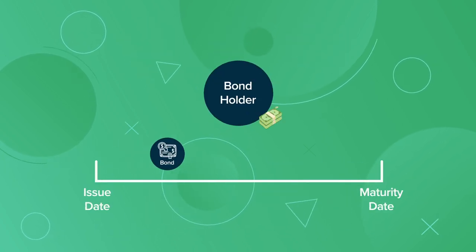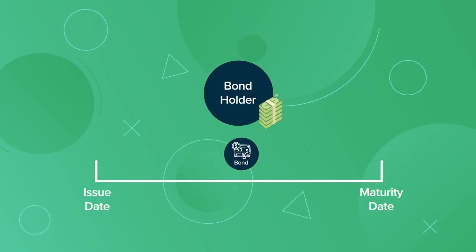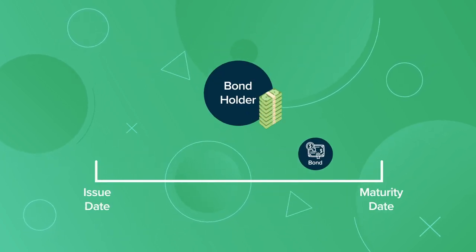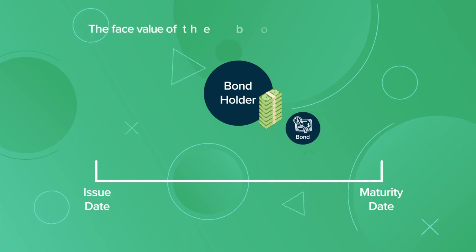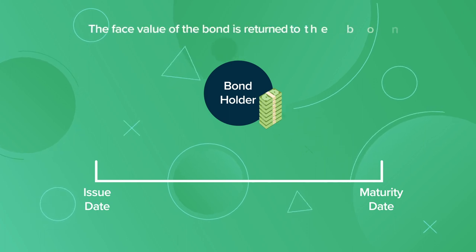Interest payments continue to be paid to the bondholder until the bond matures, and the face value of the bond is returned to the bondholder.